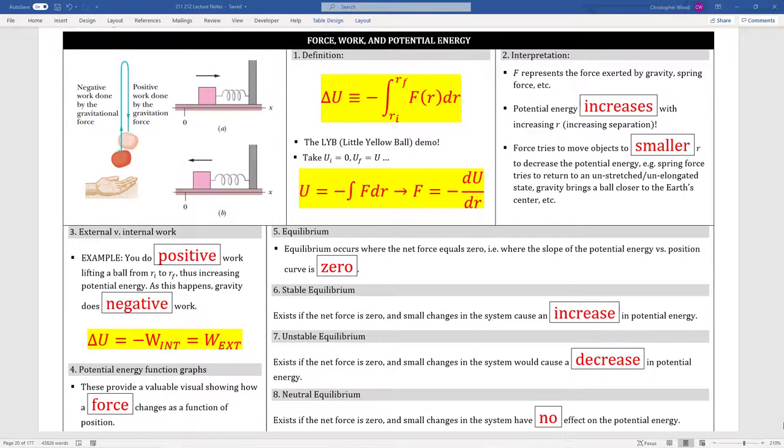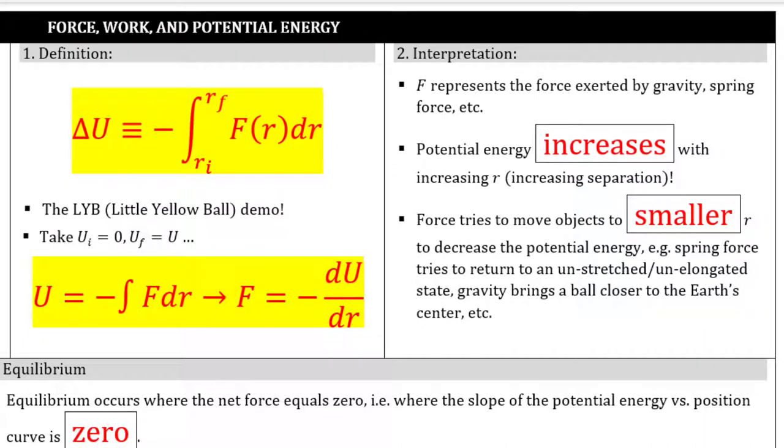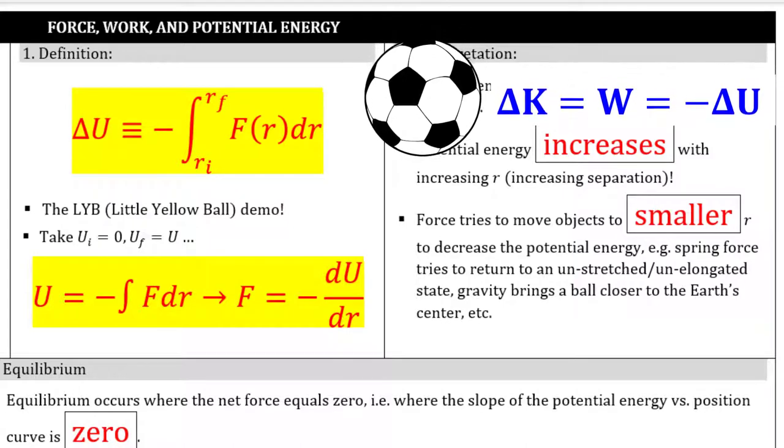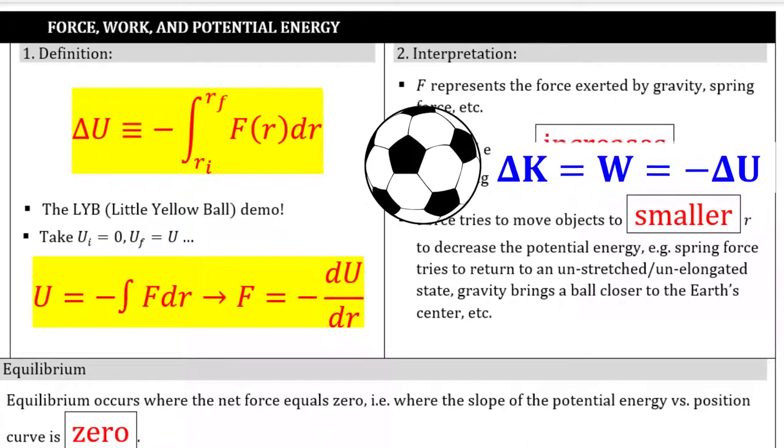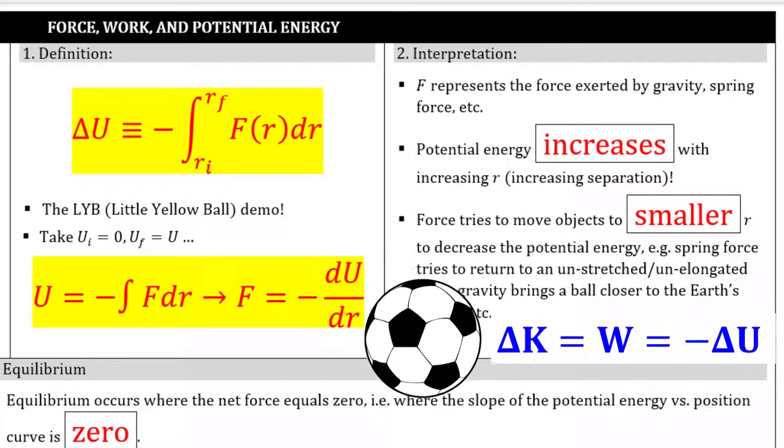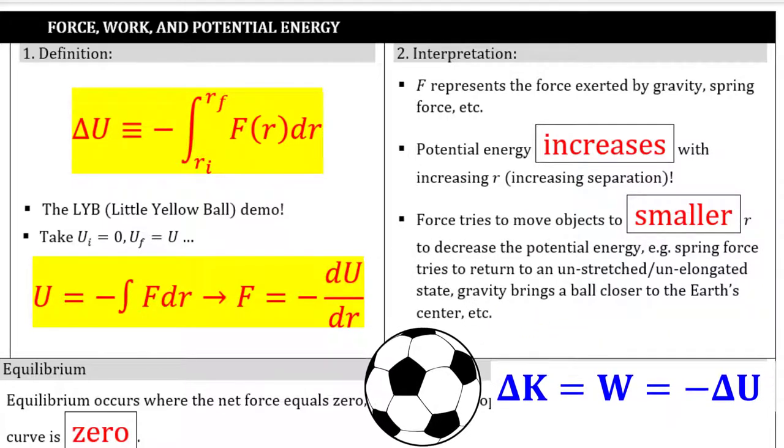Next section, force, work, and potential energy. Box one provides the definition for change in potential energy. We've seen that integral before. It's the definition of work. Now we just prepend it with a negative sign. That negative sign comes from the negative relationship between work and potential energy. Imagine a soccer ball falling towards the Earth. As the soccer ball falls towards the Earth, the gravitational force does positive work on it, while at the same time, its gravitational potential energy is decreasing.